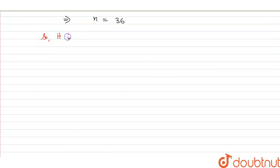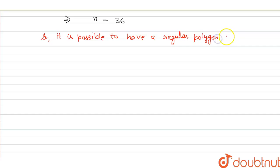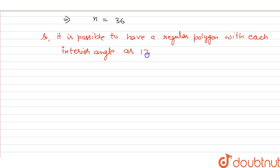So it is possible to have a regular polygon with each interior angle as 170 degrees.